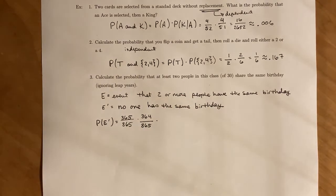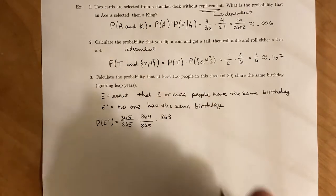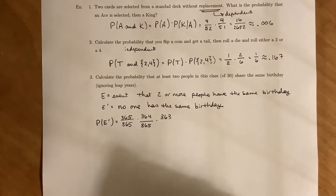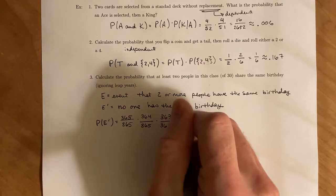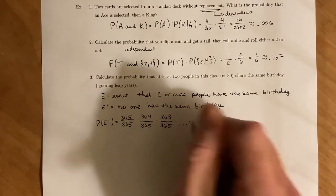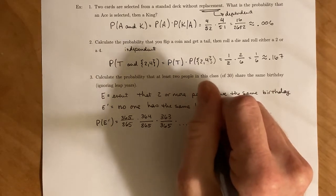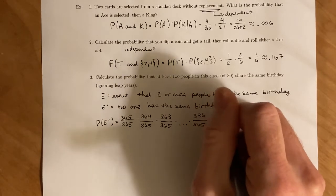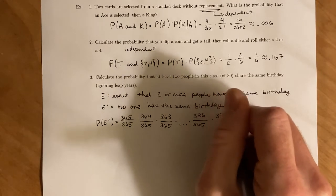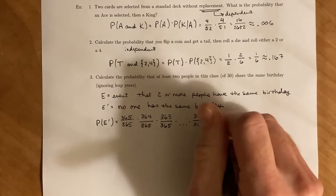Once you have those two selected, you choose a third person and they have a possibility of having one out of the 363 remaining days out of the total number of 365. And this just keeps going. And you have 336 days left to choose from out of 365. And then lastly, that last person in the class, their birthday, there's 335 days left of the year.